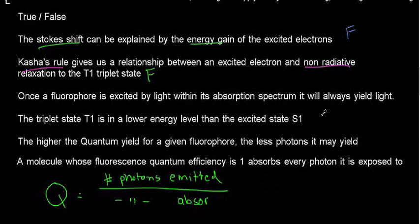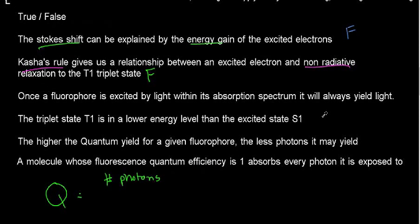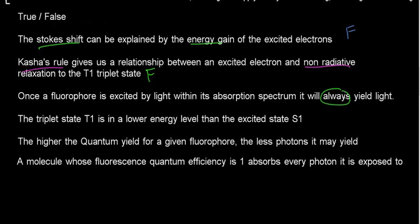Usually, whenever I see the word 'always' or 'never' on an exam, I cannot think twice about things. So, once a fluorophore is excited by light within its absorption spectrum, it will always yield light — that is false, that is not correct.